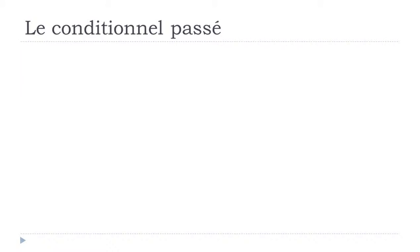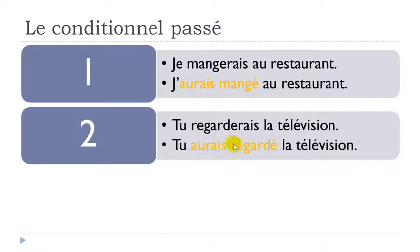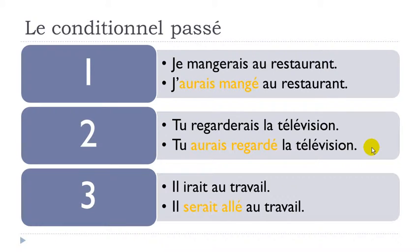Now let's see how we make the conditionnel passé. For example, je mangerais au restaurant at the conditionnel présent becomes j'aurais mangé au restaurant. Tu regarderais la télévision becomes tu aurais regardé la télévision. And il irait au travail becomes il serait allé au travail.